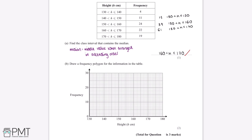For example, the midpoint of 130 to 140 centimetres will be 135 centimetres. Starting with the first row, heights between 130 and 140 centimetres: the midpoint is 135 centimetres and the frequency is 4, so we plot the point (135, 4). Next, 140 to 150 centimetres: the midpoint is 145 centimetres and the frequency is 11, so we plot the point (145, 11).